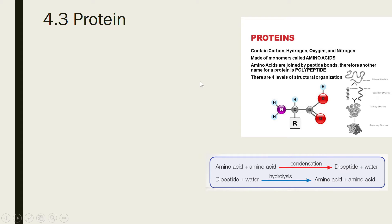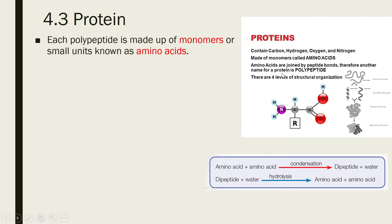Each polypeptide — that is, each protein — is made up of monomers. Remember, monomers form polymers. The monomers, or the small subunits for protein, are the amino acids.